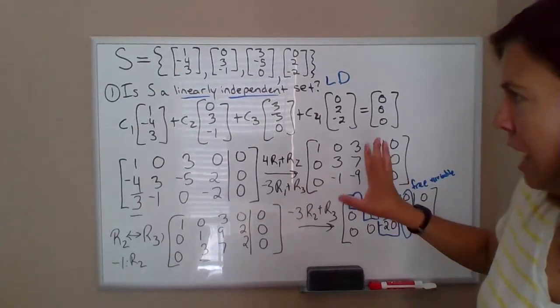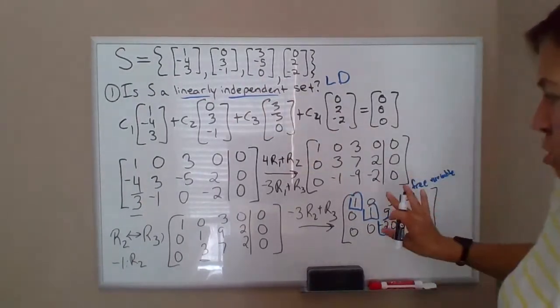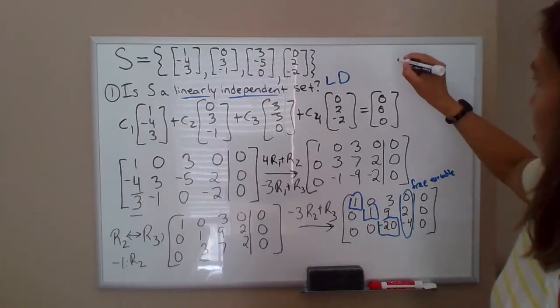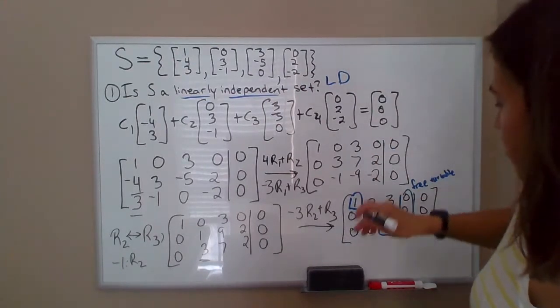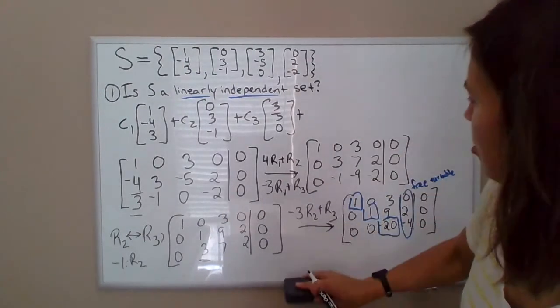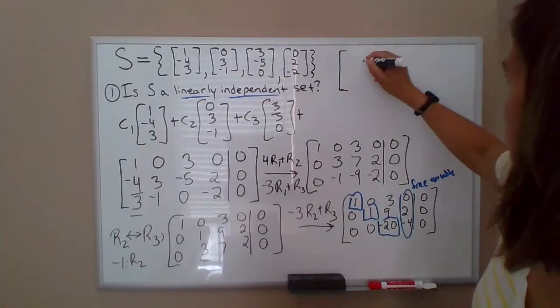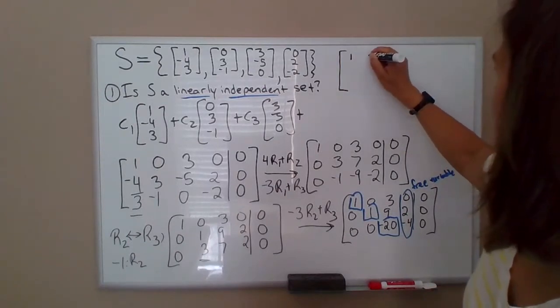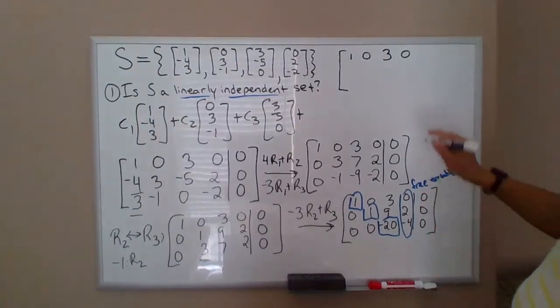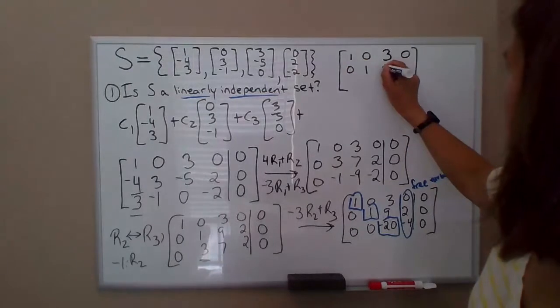However, I'm going to ask some further questions about this collection of vectors, so the row reduction is still useful. So actually, I'm going to write down our reduced matrix up here. So when we set these vectors up as columns and row reduce, we got this matrix, and I may even do one more step in the row reduction.